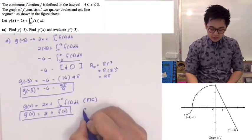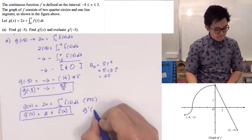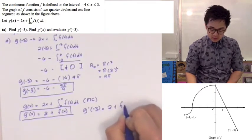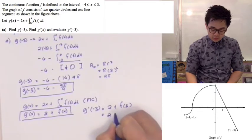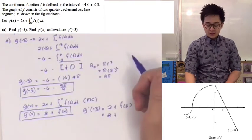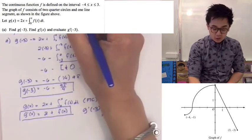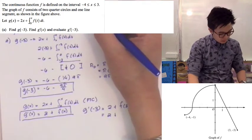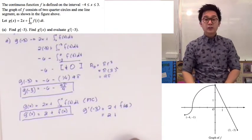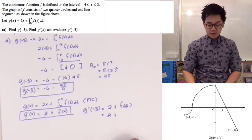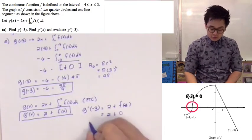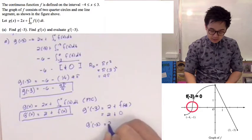Now the next task is to find g prime of negative 3. By substitution, we have 2 plus f of negative 3. Since we are given the graph of f, we find the value of y when x is negative 3. When x is negative 3, y is equal to 0. Therefore, g prime of negative 3 is equal to 2.